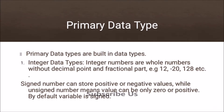Primary data types are built-in data types — these are already built-in and the user does not have to define them. The first one is integer data types. Integer numbers are whole numbers without decimal point and fractional part, meaning full numbers with no decimal point.